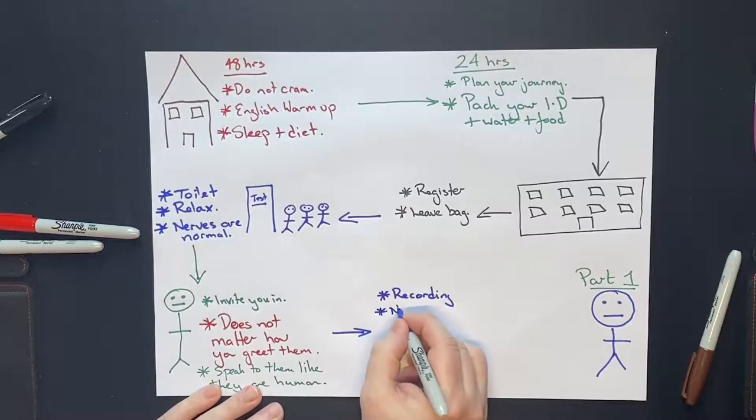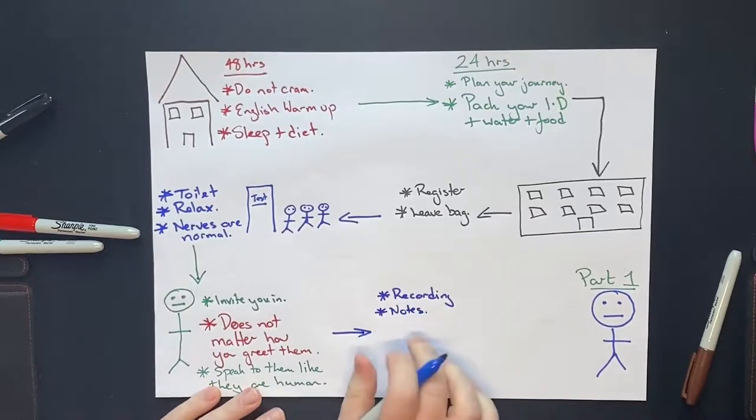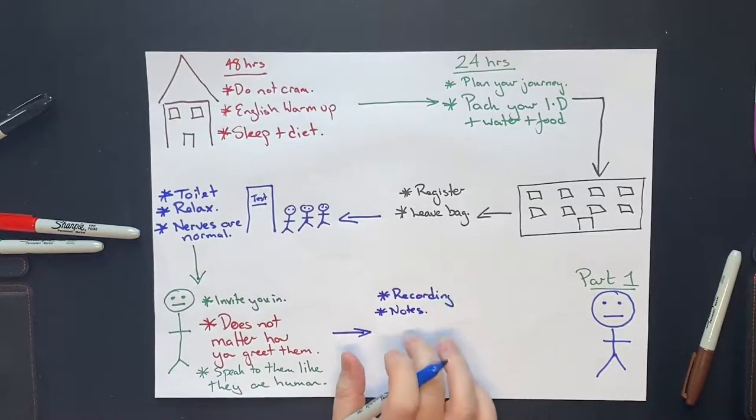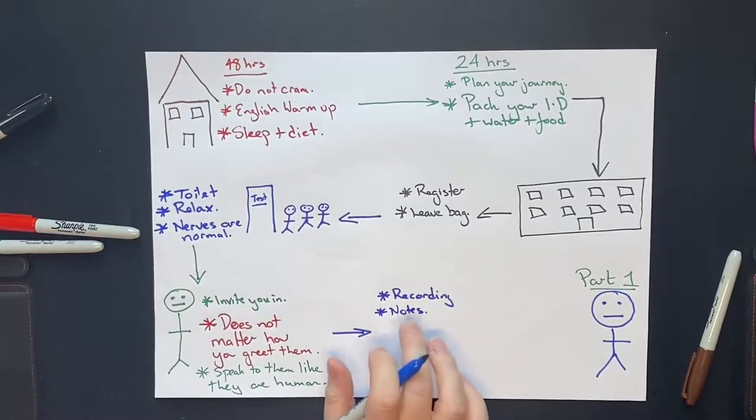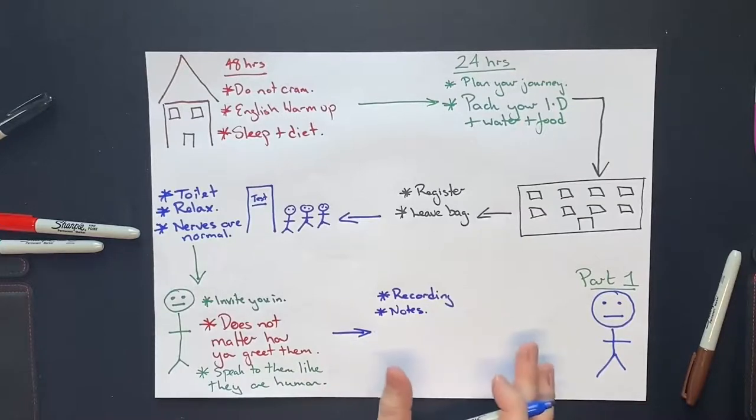Also, they might make some notes. Don't worry about what notes they make. So it's a very common thing that the examiner will write numbers. So it might be a number like the timing or something like that. And you will look at it and think, oh my God, they wrote down five, I'm at a band five. Or they might write down nine and you think that you've got a band nine. These have nothing to do with your score. So ignore the notes that they're making.